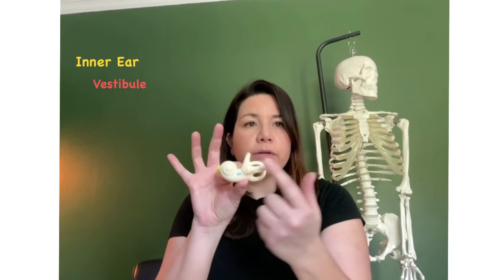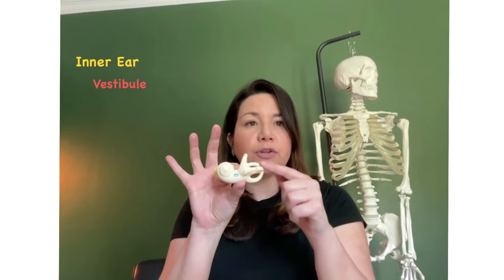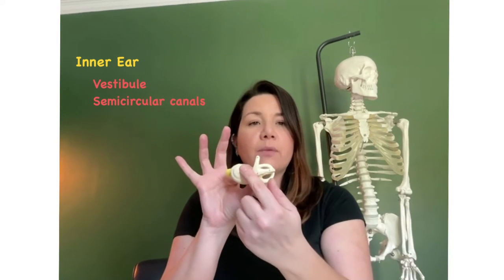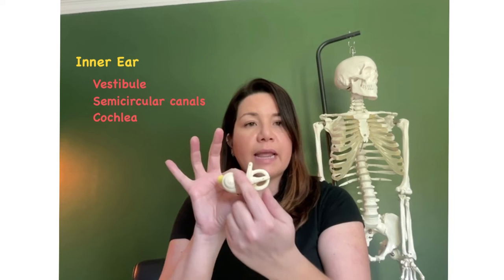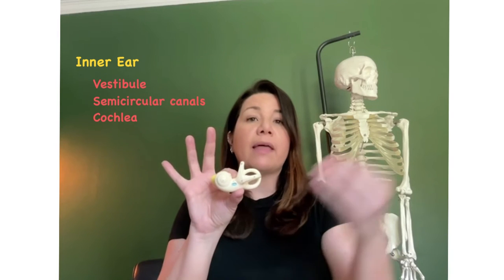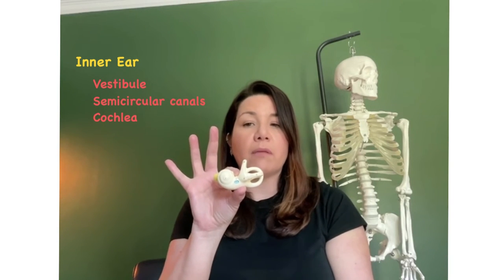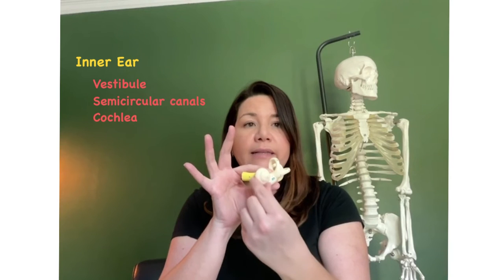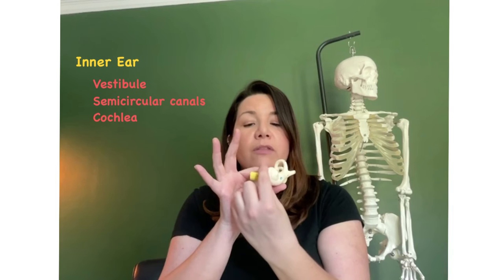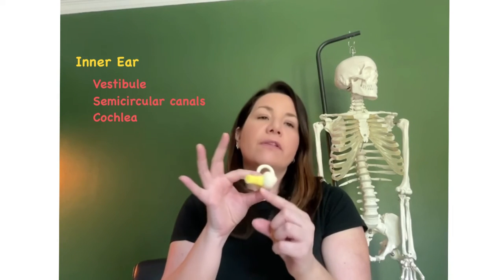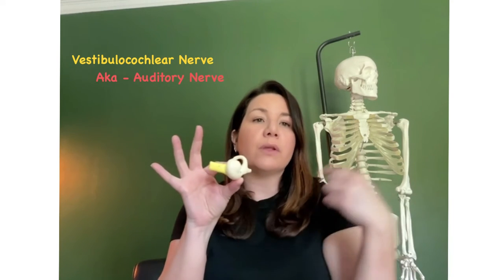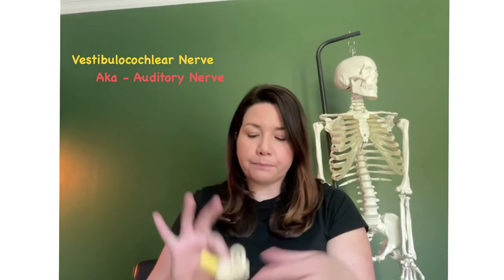There are two other portions of the inner ear. We have the semicircular canals, which function in equilibrium and balance. And then we have the cochlea — this snail-like structure back here that functions in hearing. When the cochlea takes the signals it gets from the bones — those vibrations — it's going to converge onto this nerve called the vestibulocochlear nerve, which takes those signals to the brain in order to interpret what we're hearing.